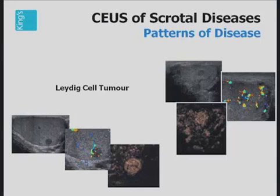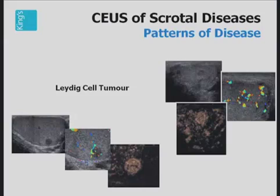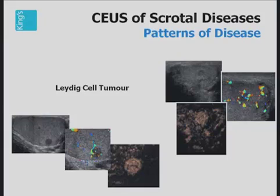For example, this is a Leydig cell tumor. Leydig cell tumors tend to be much more vascular than primary germ cell tumors, and the vascularity tends to last longer. However, this should not be used to differentiate this tumor from a primary germ cell tumor. In this case, it's important to ascertain that this incidentally discovered low-reflective abnormality in the testes is vascularized. This will allow appropriate management — either to watch the lesion over several months, or to allow surgical resection under ultrasound guidance.